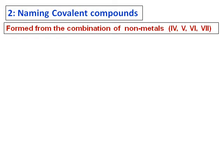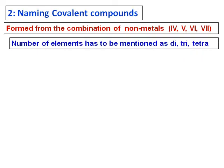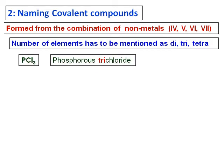Now we learn how to name covalent compounds. Covalent compounds are formed from the combination of non-metals, and the number of elements has to be mentioned here as di, tri, etc. For example, when naming PCl₃, we name phosphorus as is, but Cl will be named as trichloride. Therefore, the name of this compound is phosphorus trichloride. Unlike ionic compounds, here the number of anions and cations has to be mentioned.